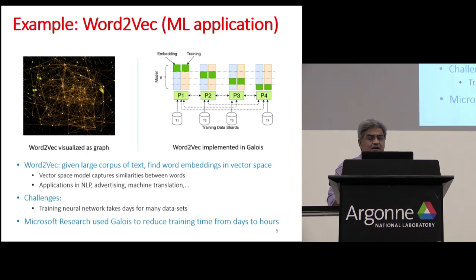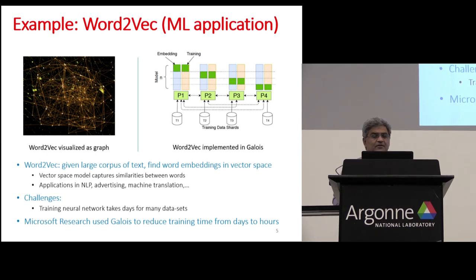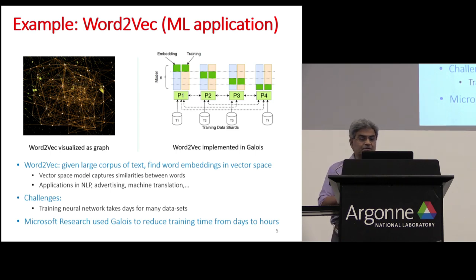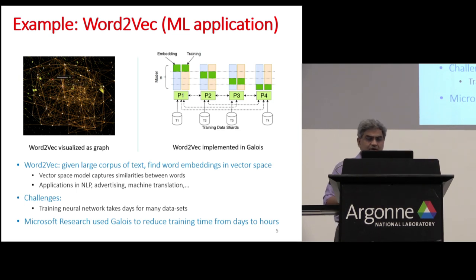Word2Vec has applications in natural language processing, advertising, and machine translation. The challenge is that even though people have shown a two-level neural network is enough, there's a lot of training data and the model is very complex, so training may take days for many data sets. This summer we worked with MSR — Microsoft Research — and they used our Galois system to reduce training time from several days to a few hours.